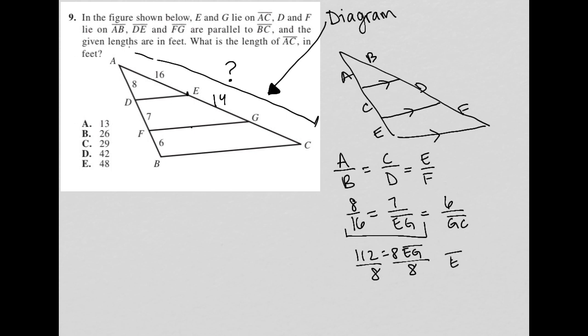Now to focus on this proportion here, these two ratios. So I have 7 over 14 is equal to 6 over line segment GC. I can simplify this to 1 over 2. 7 over 14 reduces to one half. So one half equals 6 over GC.